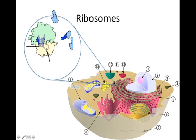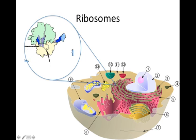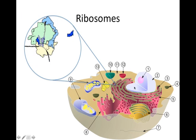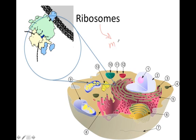Next we're on to ribosomes. Ribosomes are dotted over the endoplasmic reticulum, and there are also free ribosomes throughout the cell. What the ribosome does is read RNA. RNA is a copy of the DNA — the DNA makes RNA, and the RNA comes out to the ribosome. The ribosome reads it, and that tells it what order to put amino acids together, ultimately building a protein. The short version is: ribosomes make proteins. And proteins are what most of your organelles and all the parts of the cells are made of.